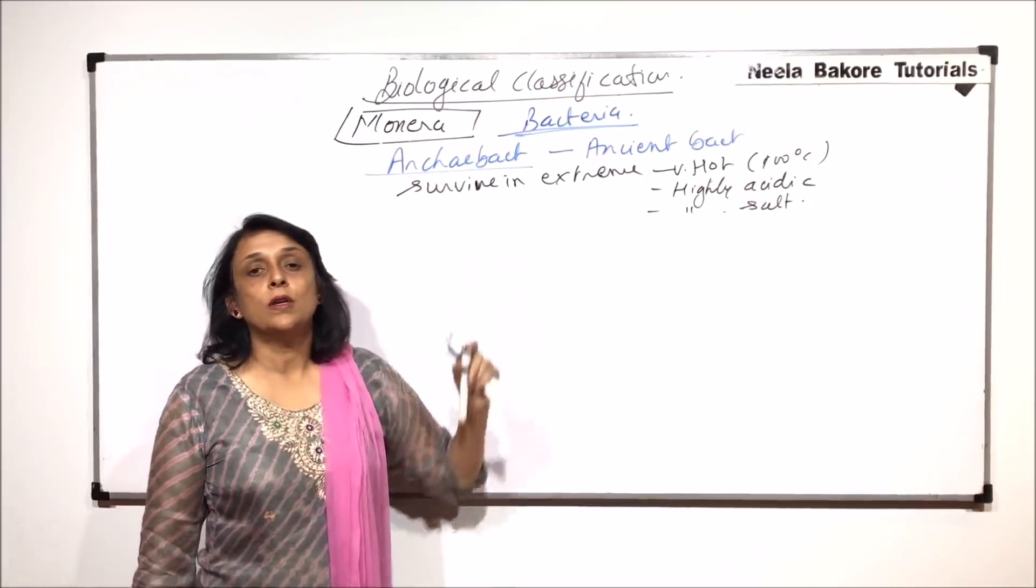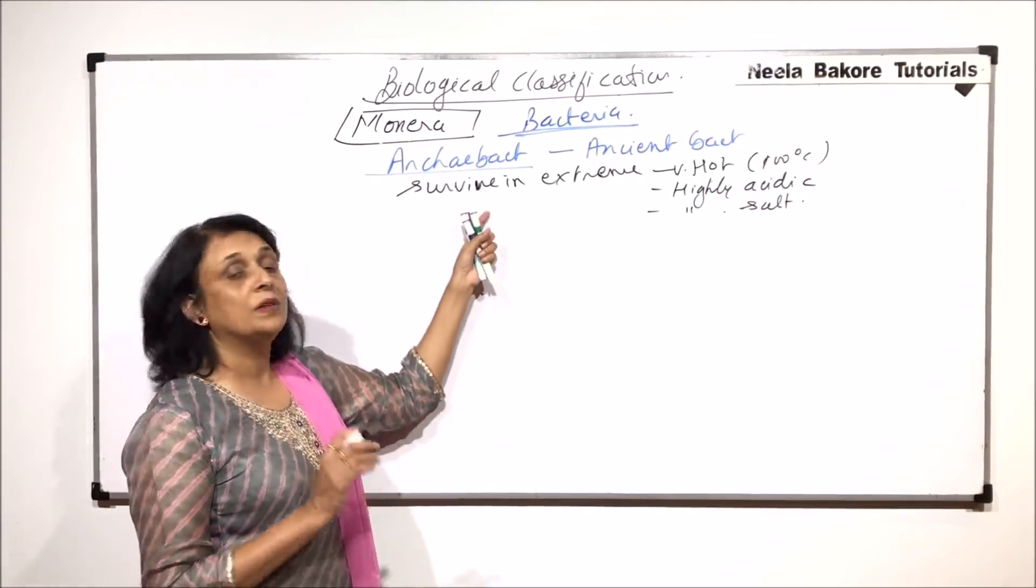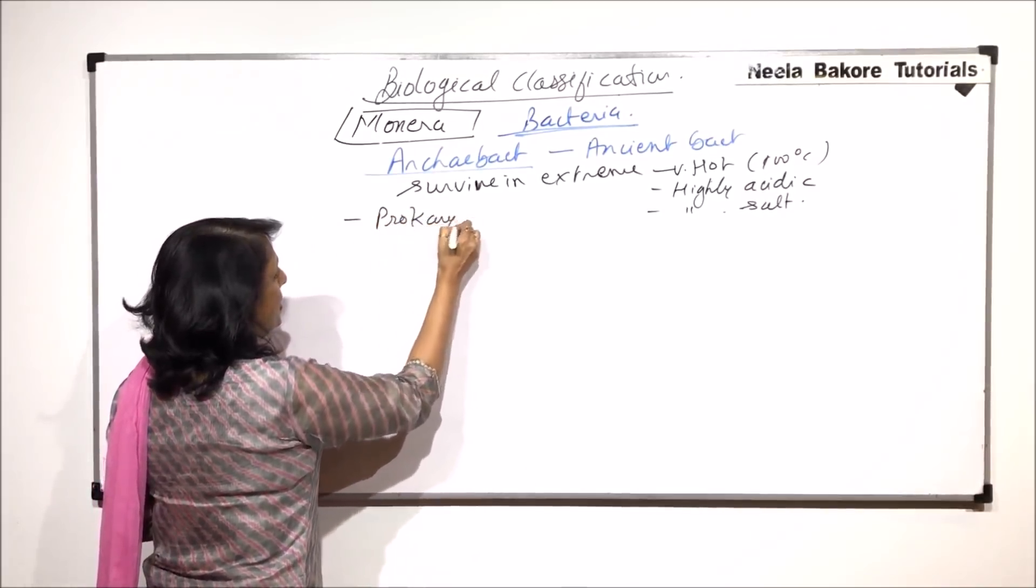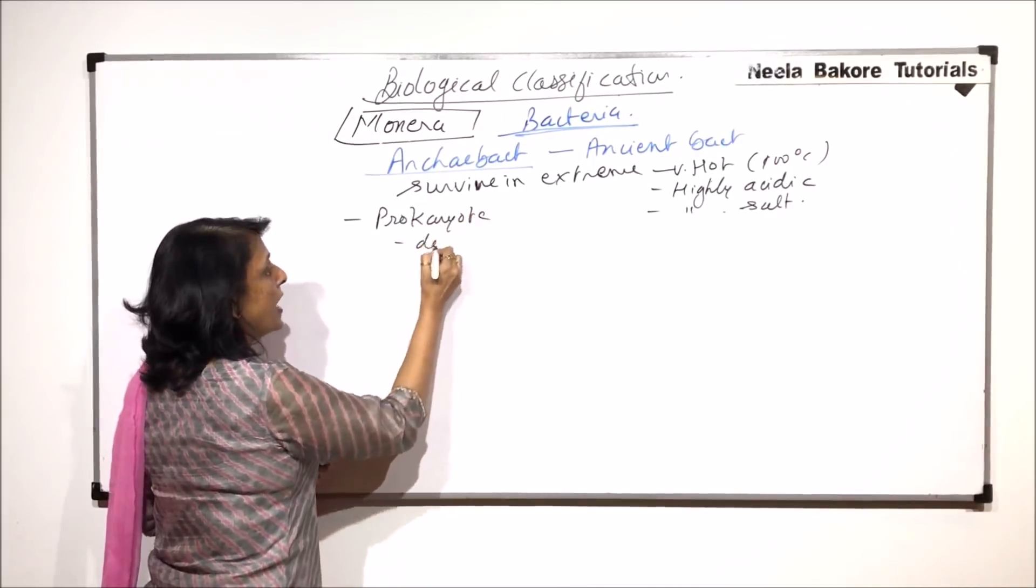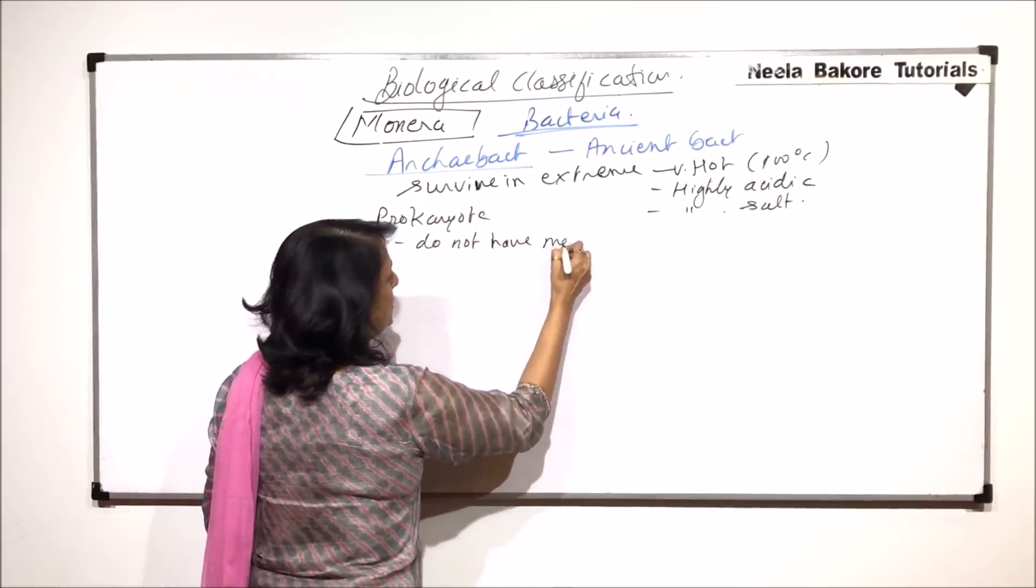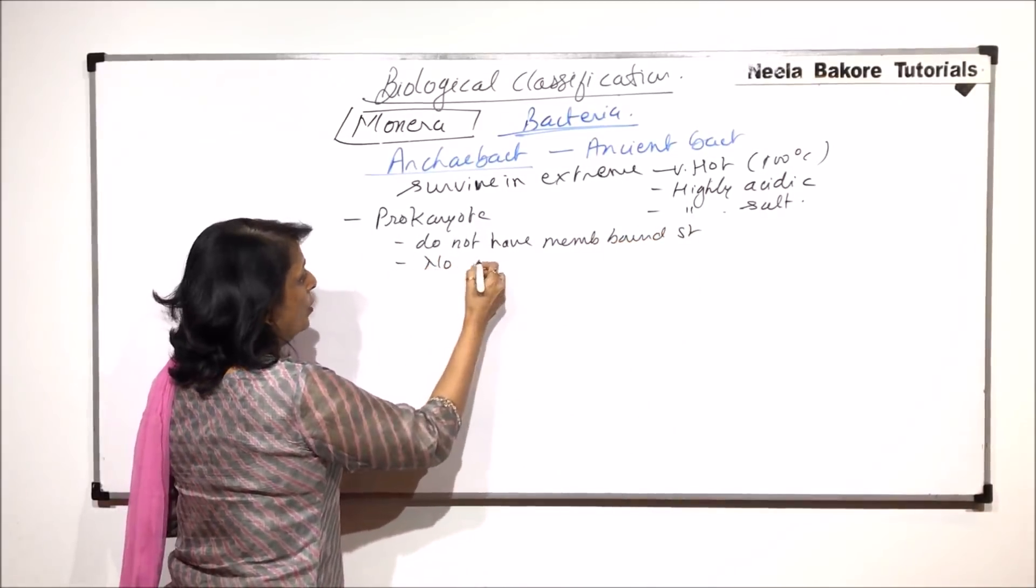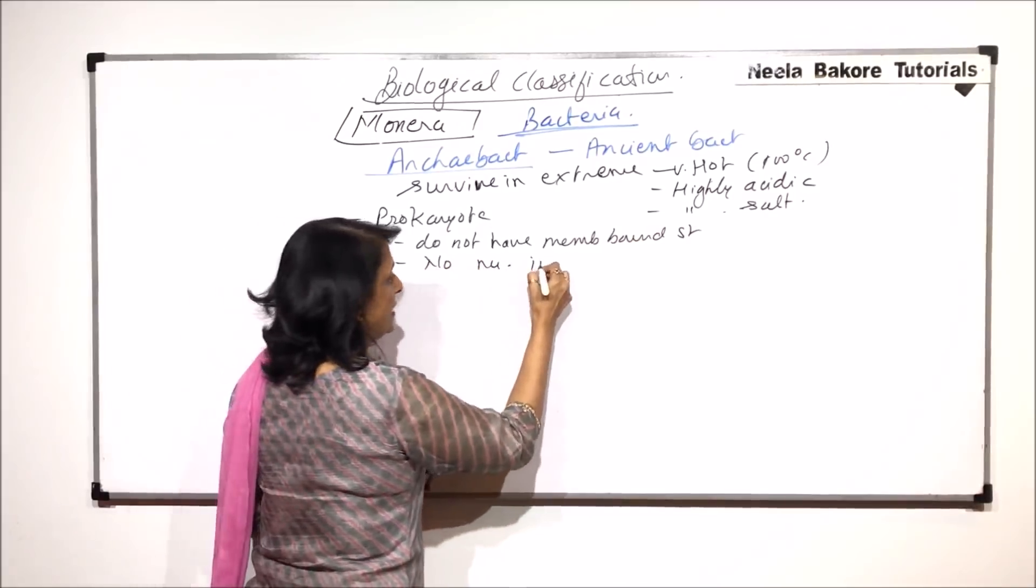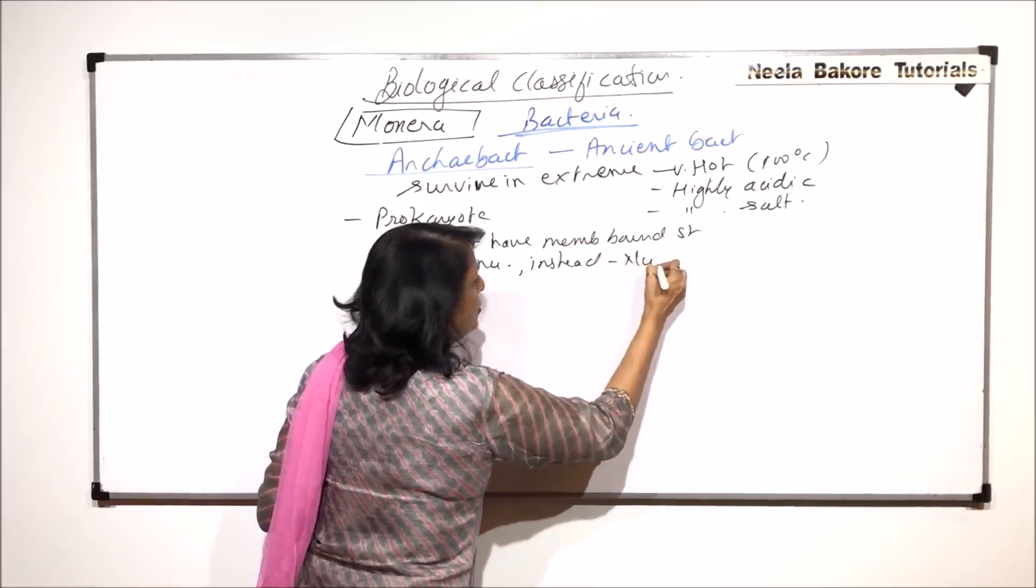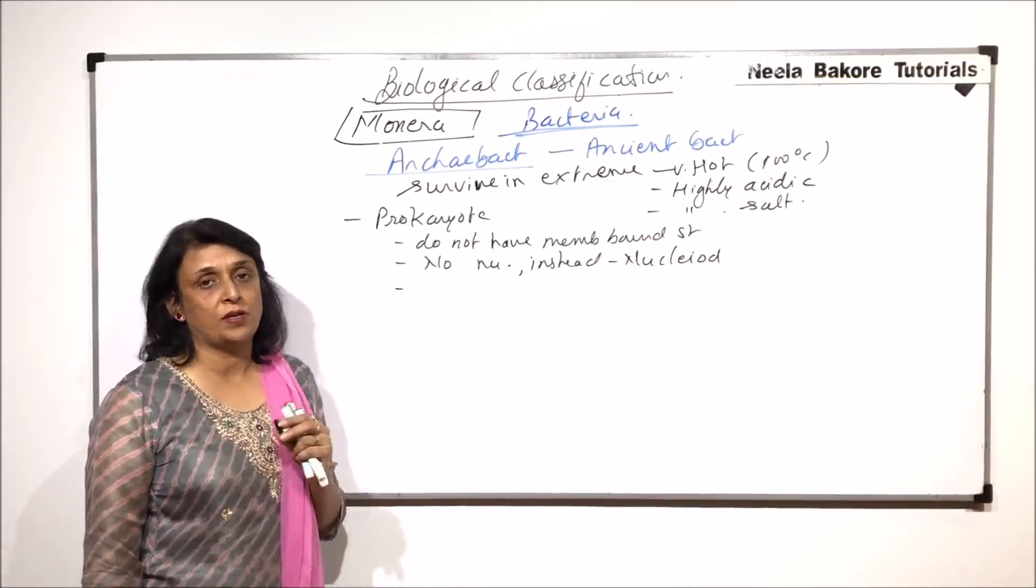Now we will talk about what are those things which help these bacteria to survive in those extreme conditions. Now these are bacteria that means they are prokaryotes. So typical prokaryote-like structures. They do not have any membrane bound structures. That means no organelles, no nucleus. Instead the genetic material is naked and we call it nucleoid. Now let us come to some special things.